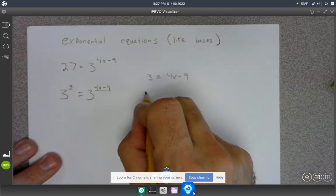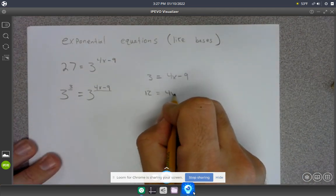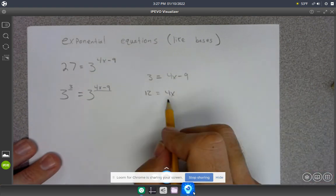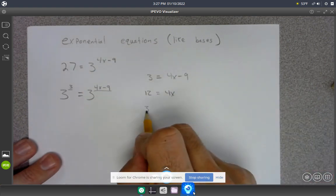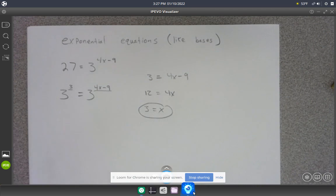Add 9 to both sides, you get 12 is equal to 4x, and then divide by 4, you're going to get 3 is equal to x. And that's my solution.